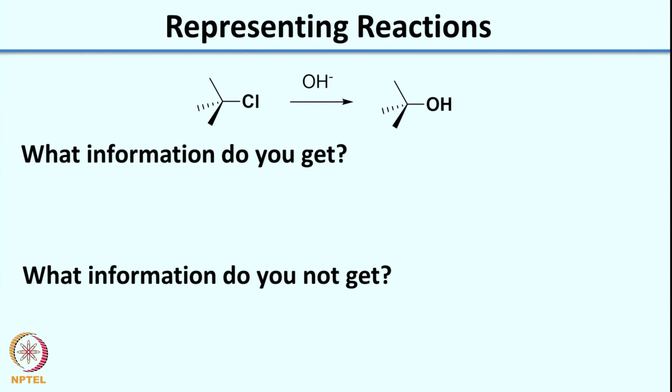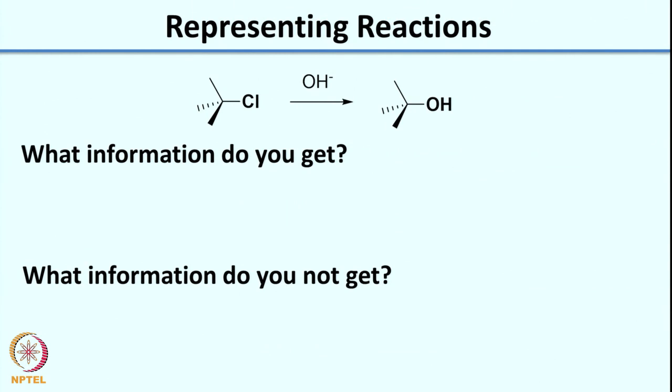What are the ways of representing reactions? A simple example is a substitution reaction where a chloride is replaced by OH, with OH⁻ as the nucleophile. Based on what you learned last week, you should be able to draw an arrow-pushing mechanism for this. I would like you to think about two questions: one, what information do you get when you look at this representation where A goes to B with reagents above the arrow? Two, what information do you not get?